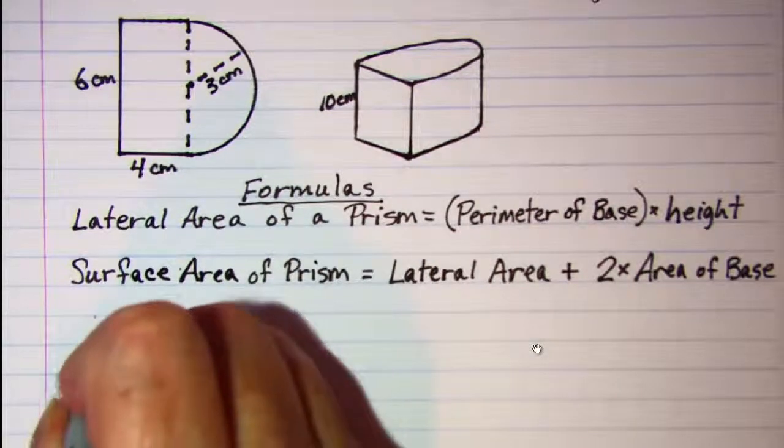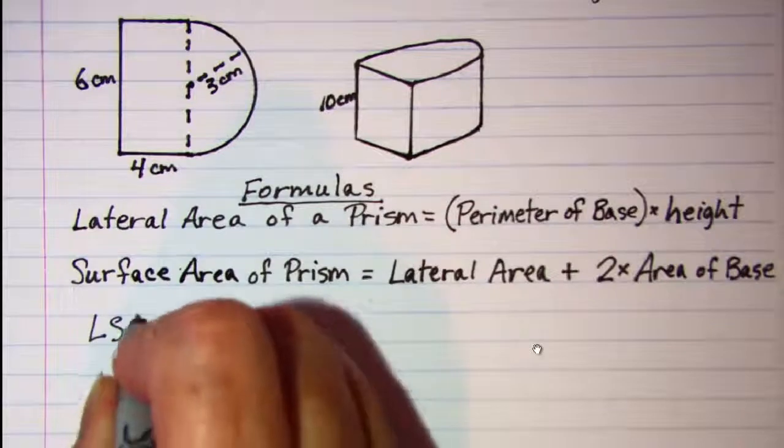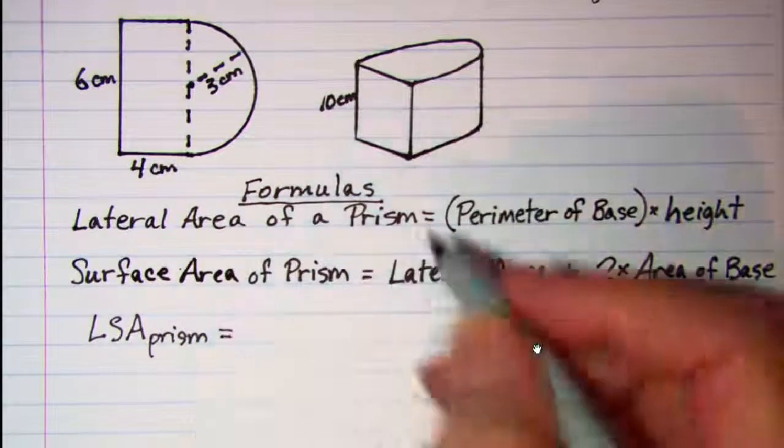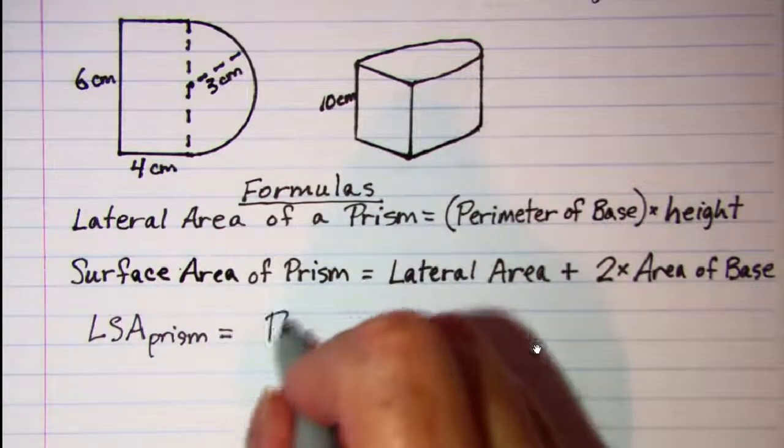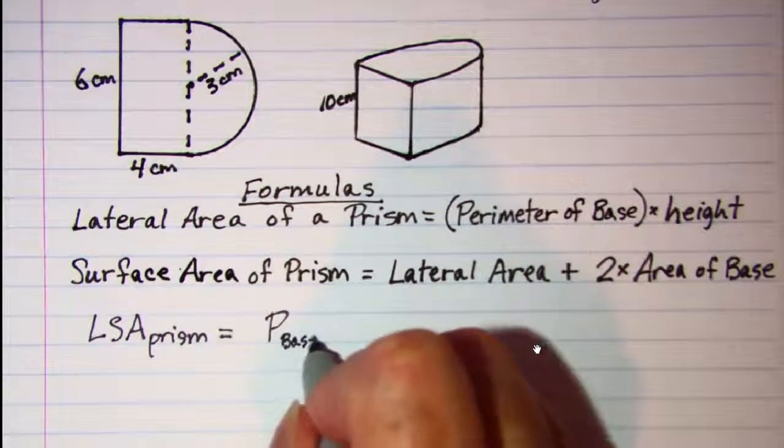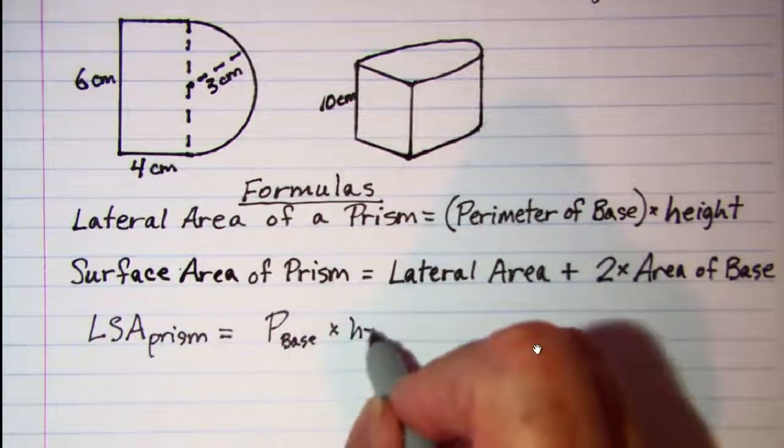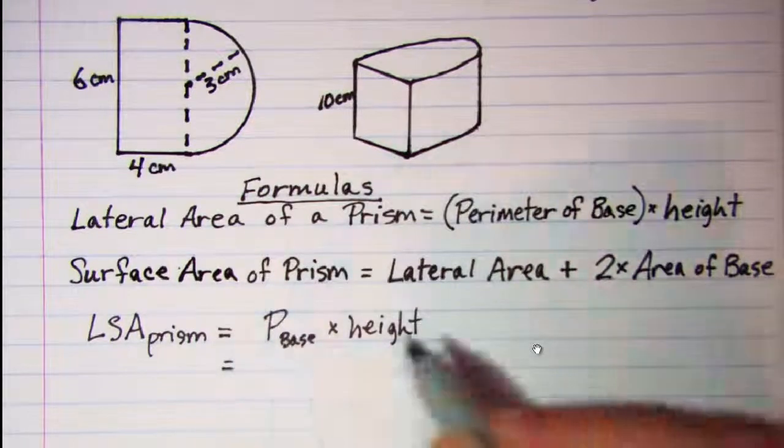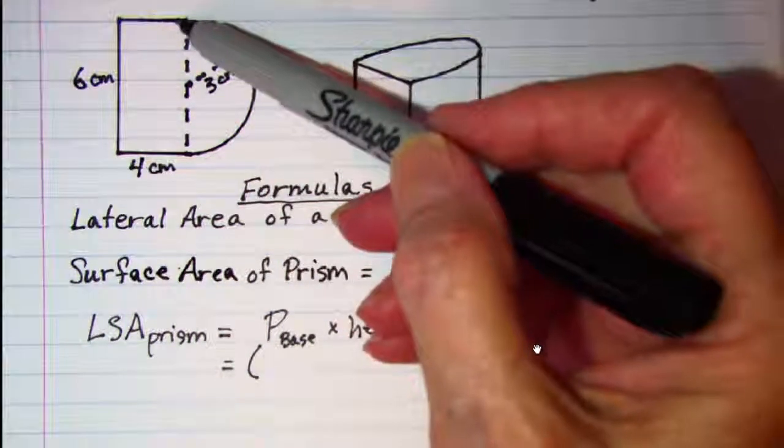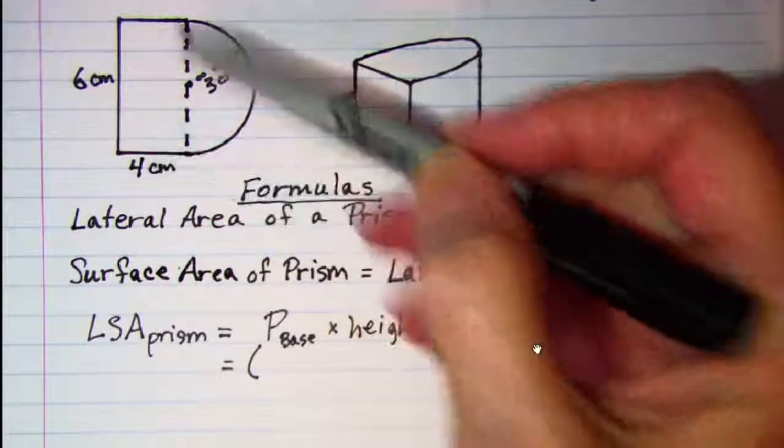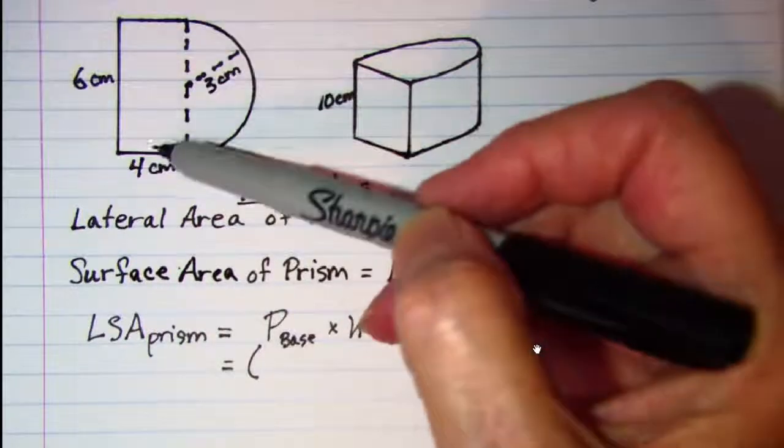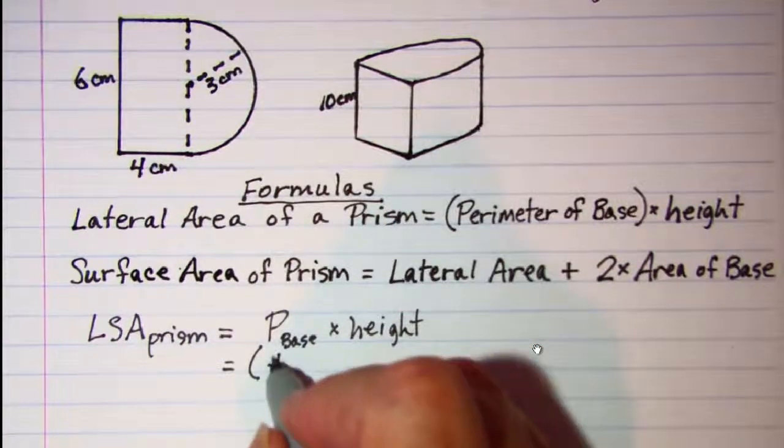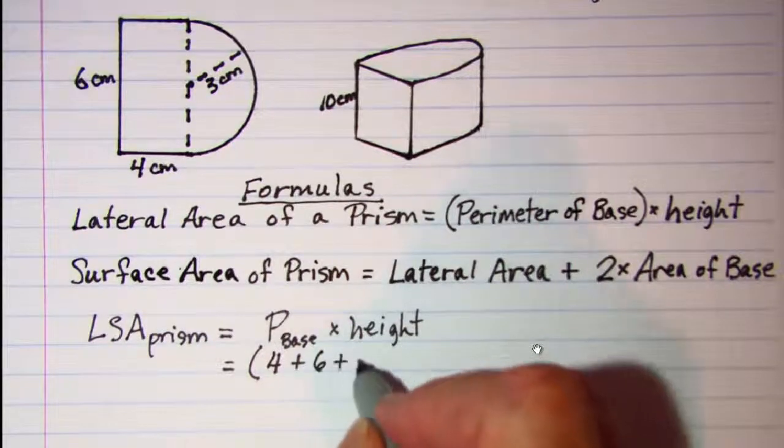So our lateral surface area of the prism is equal to the perimeter of the base times the height. So that is the first formula that we will be using. Now the perimeter of our base, we can see that we have the three line segments here. This top line segment measures four centimeters just like this one.